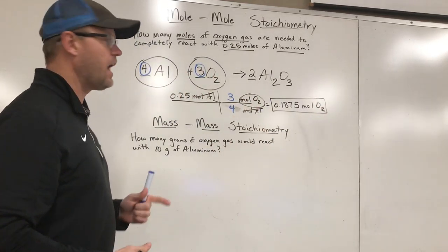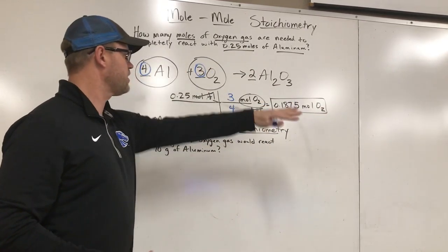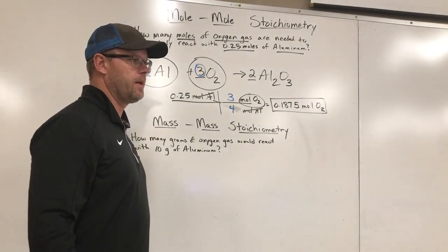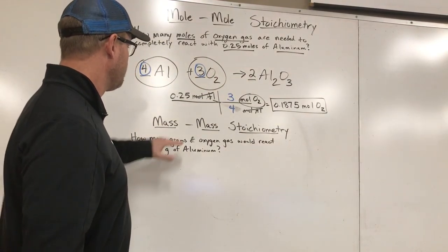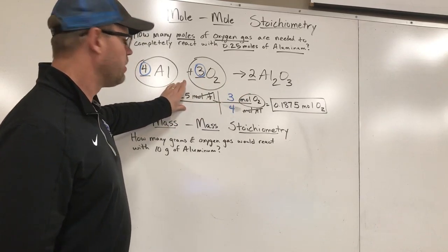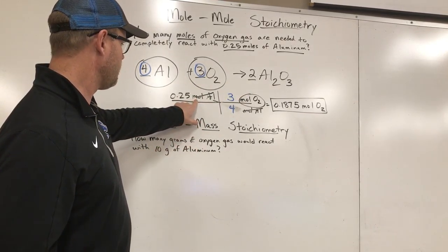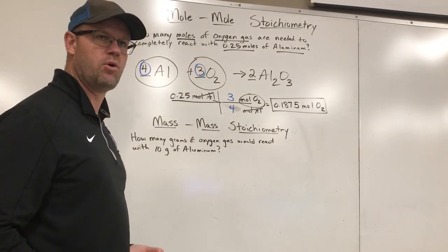And that right there is the heart of stoichiometry. Stoichiometry is about comparing one thing to another thing within a reaction. That could be two reactants. It could be a reactant and a product. It could be two products. It doesn't matter. I could compare aluminum to anything in this reaction as long as I have the balanced numbers that go in front.